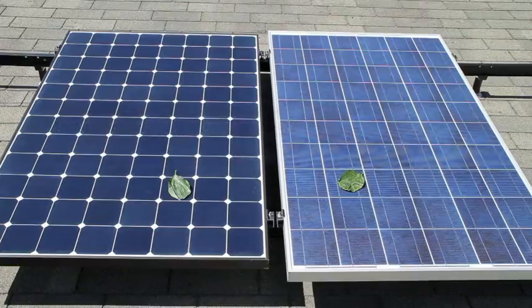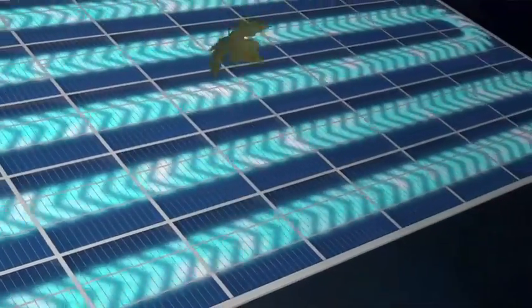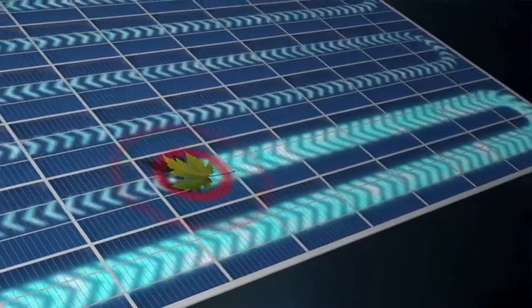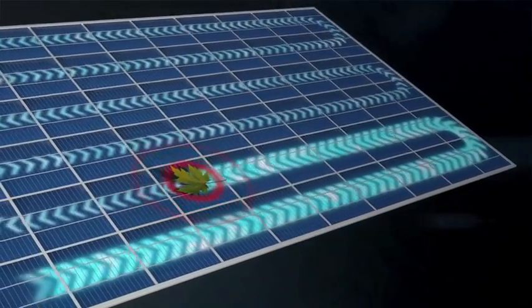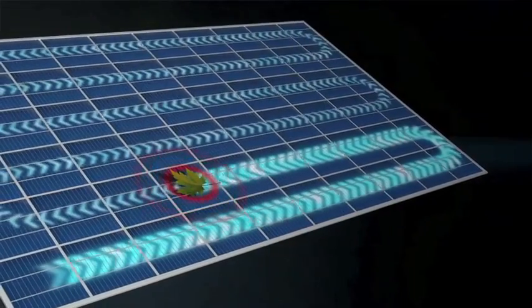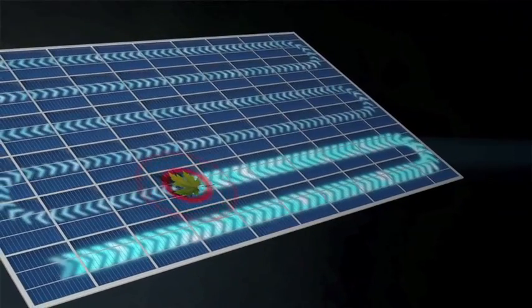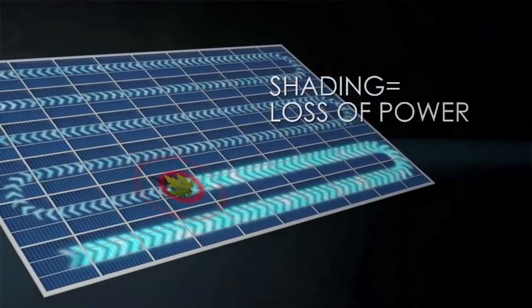Why? Because a shaded solar cell can't generate power and it can't properly pass the power generated by its unshaded neighbor cells. Instead, it dissipates that power, resulting in additional power loss for the entire panel.